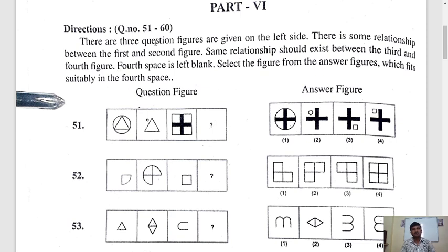I will read the directions. Question number 51 to 60. There are three question figures are given on the left side. There is some relationship between the first and second figure. Same relationship should exist between the third and fourth figure. Fourth space is left blank. Select the figure from the answer figures which fits suitably in the fourth space.